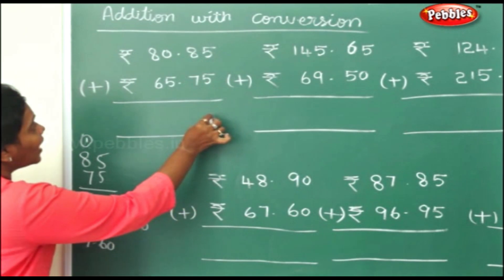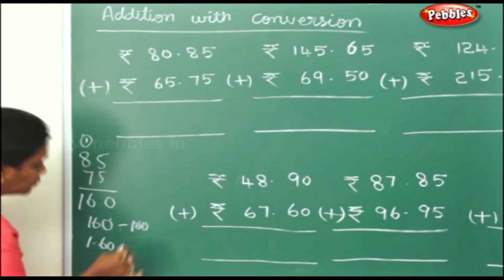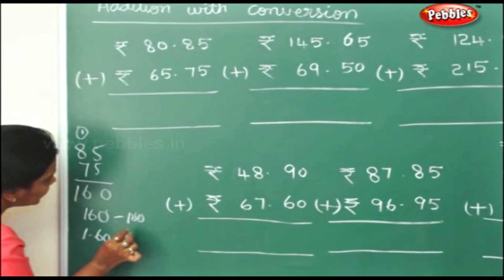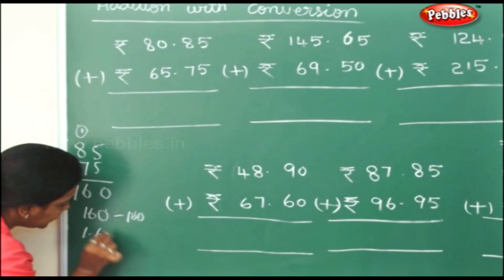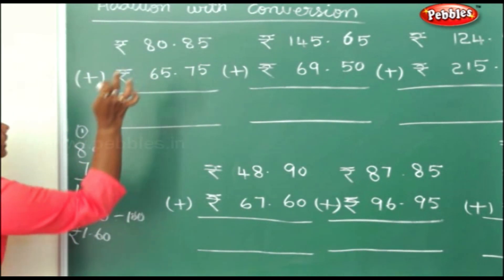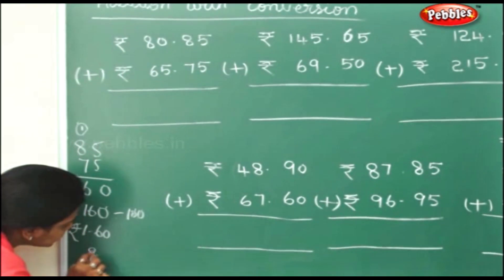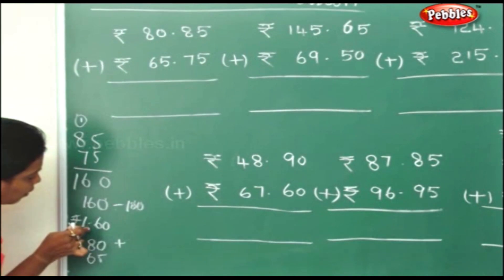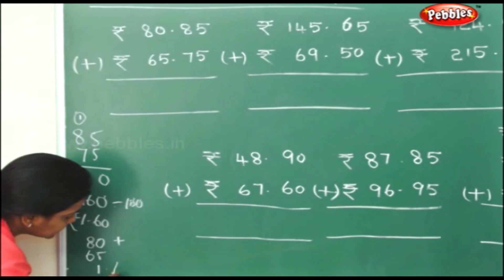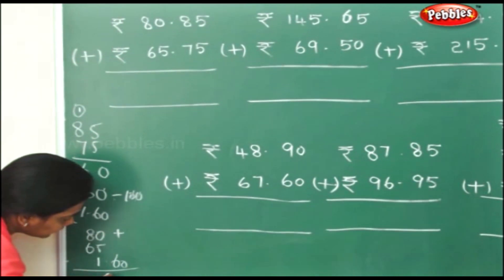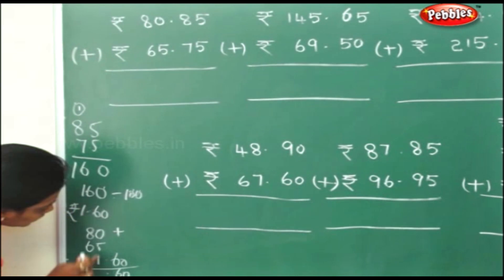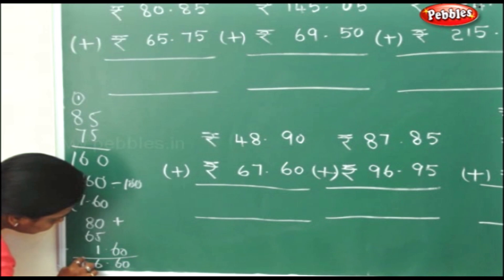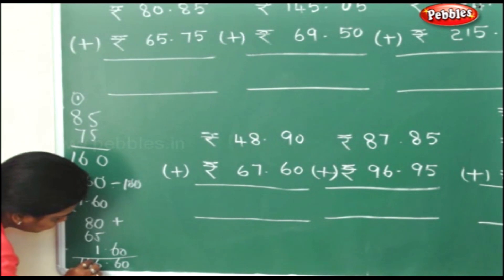So here you have 1 rupee and 60 paise. Now we will add up the rupees: 80 rupees plus 65 rupees, plus your 1 extra rupee, and 60 paise. 5 plus 1 is 6. 8 plus 6 is 14.